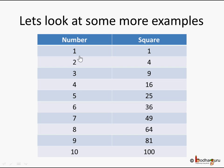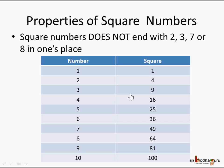Let's take some more examples. On the left side I have certain numbers: 1, 2, 3, 4, 5, 6, 7, 8, 9, 10, and on the right side I have written their squares — the same number multiplied by itself. So 1 into 1 is 1, 2 into 2 is 4, 3 into 3 is 9, and so on. 8 into 8 is 64, 9 into 9 is 81, and 10 into 10 is 100.